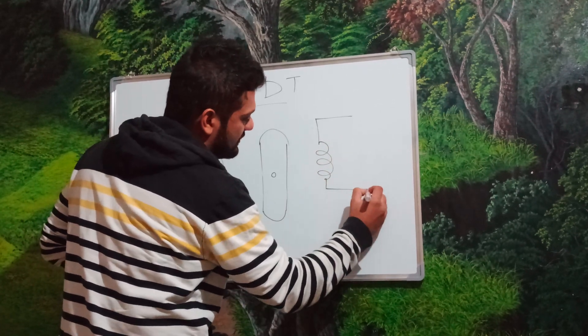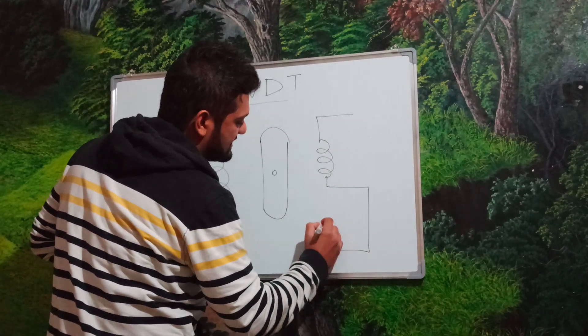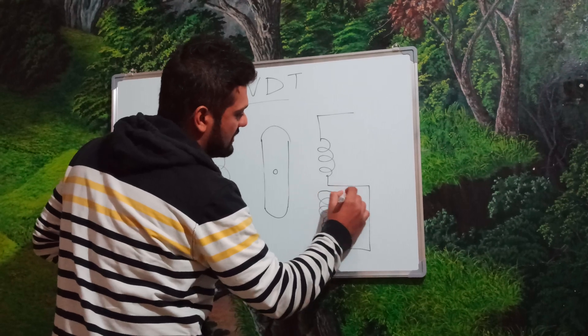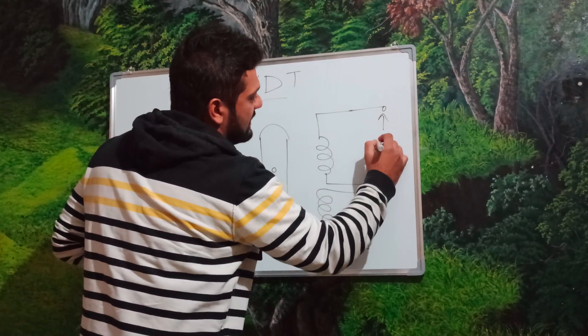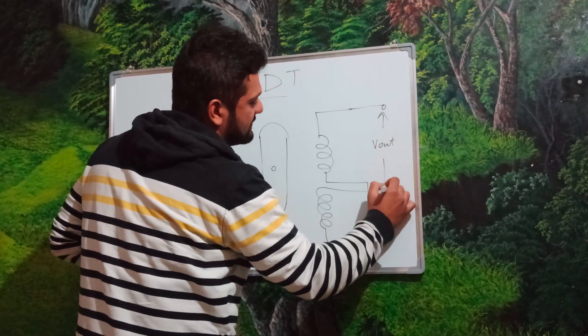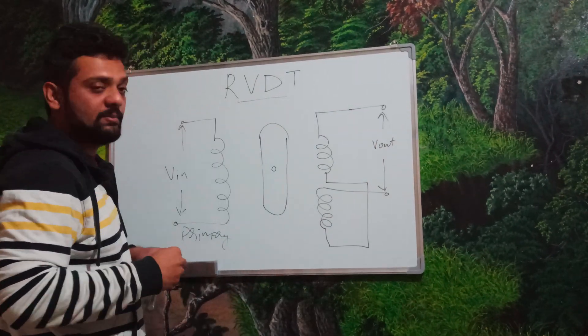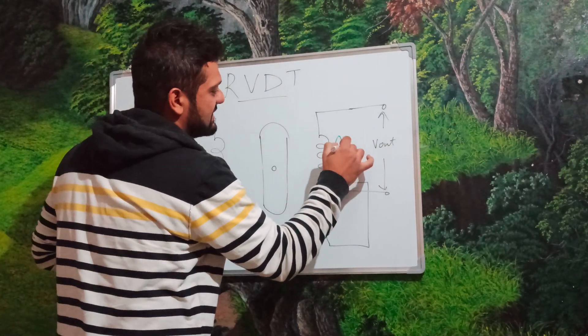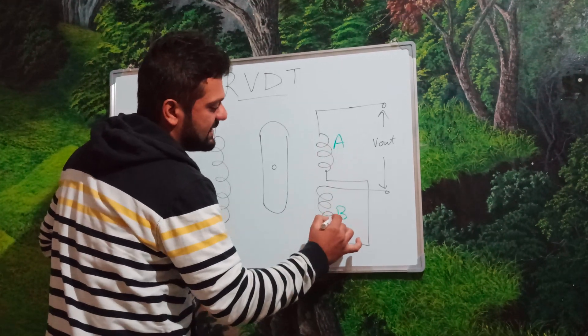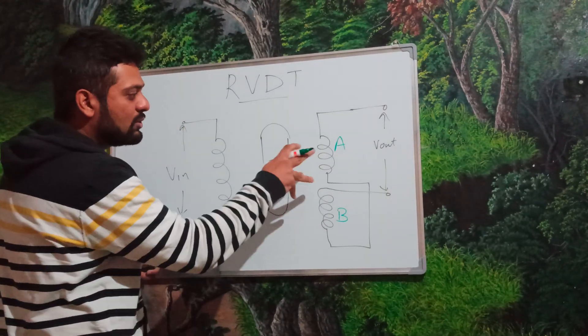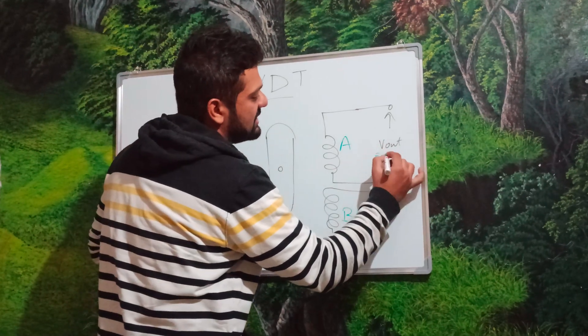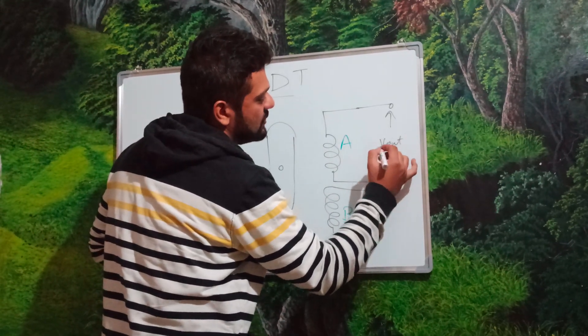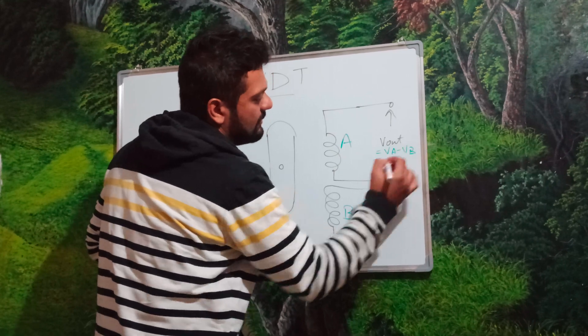This one over here, the first secondary coil, and this one over here, the second secondary coil, and the difference of voltages over here generated by the first coil, let us name it as coil A, and the second coil is coil B. Now, both these coils are going to be identical coils and the difference in voltage would be given as V output, that is, V A minus V B.